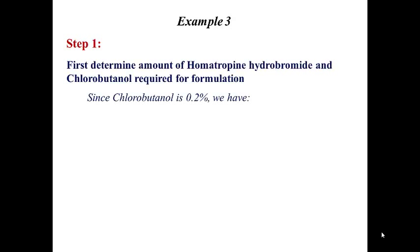We also determine the amount in grams of chlorobutanol. That is 0.2 grams per 100 milliliters multiplied by 50 milliliters, giving 0.1 grams. At this stage we have all the information needed to substitute into the generalized White-Vincent equation.